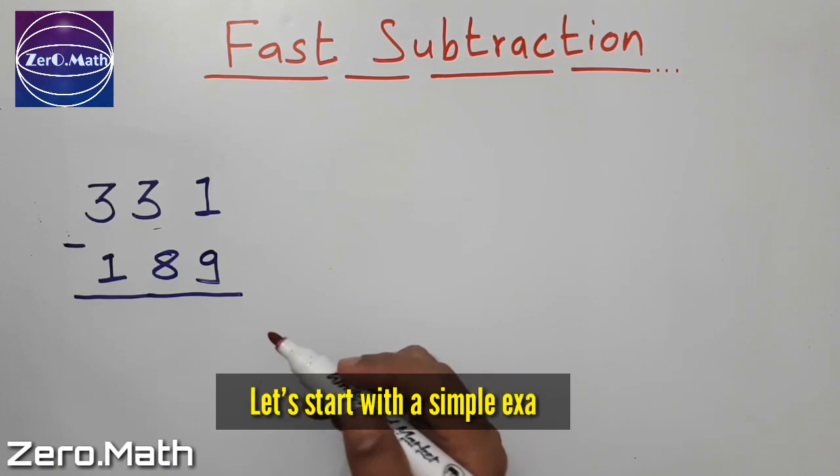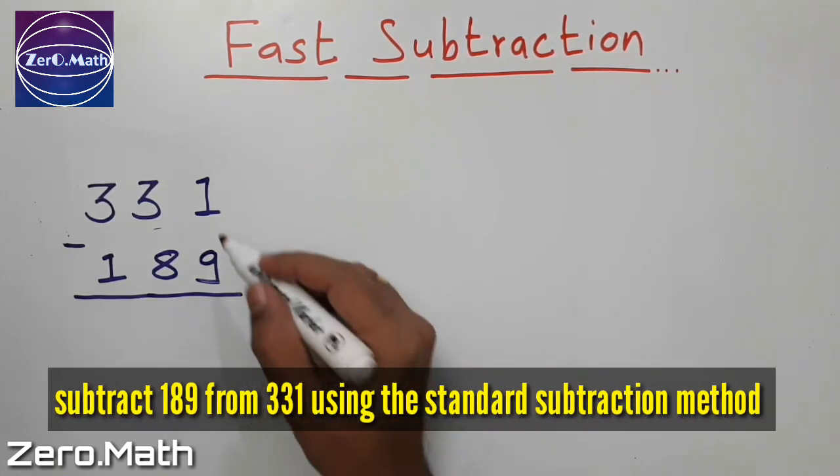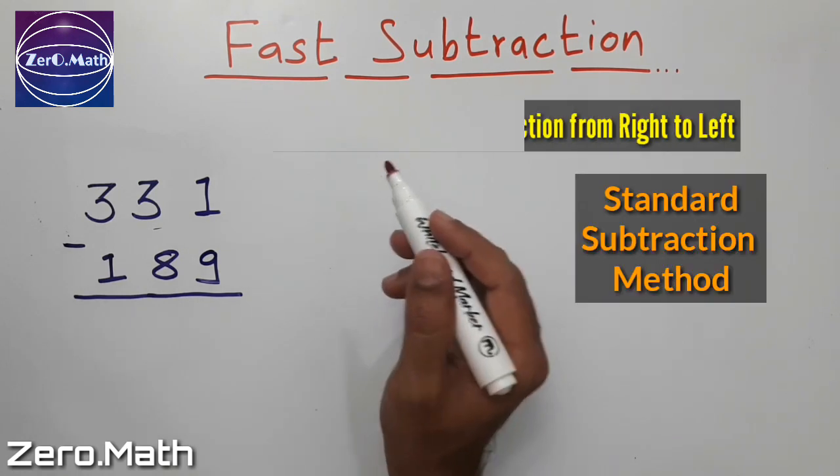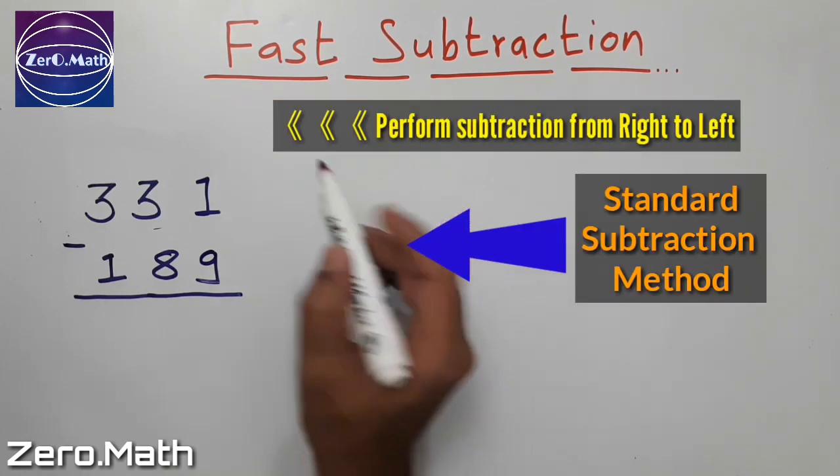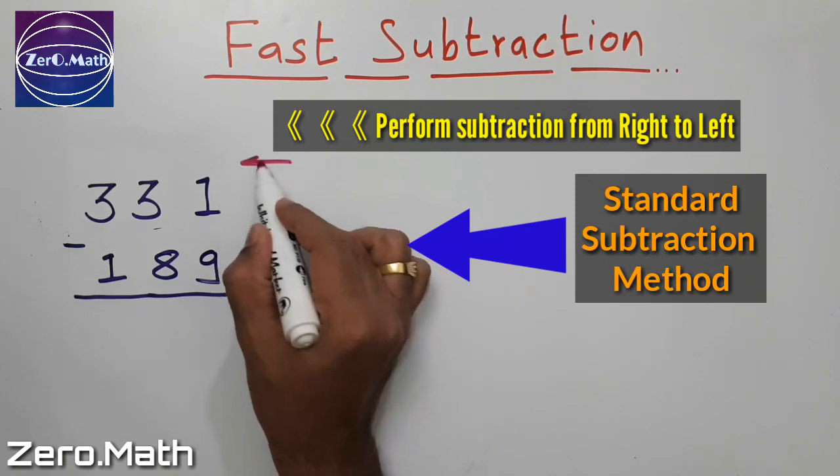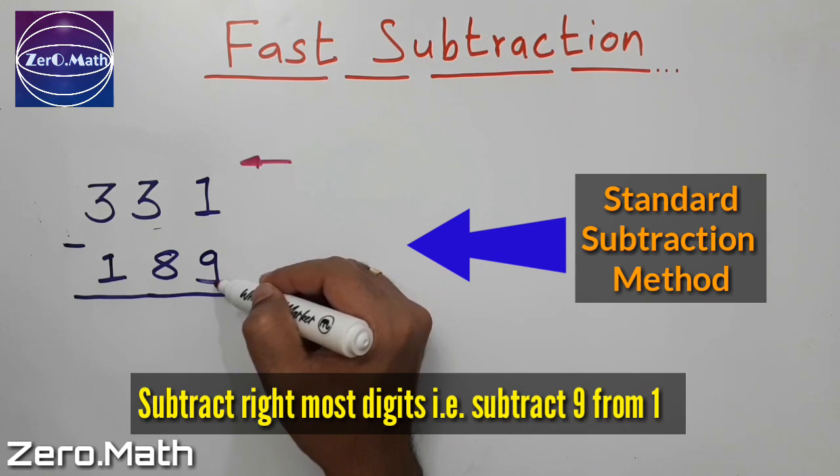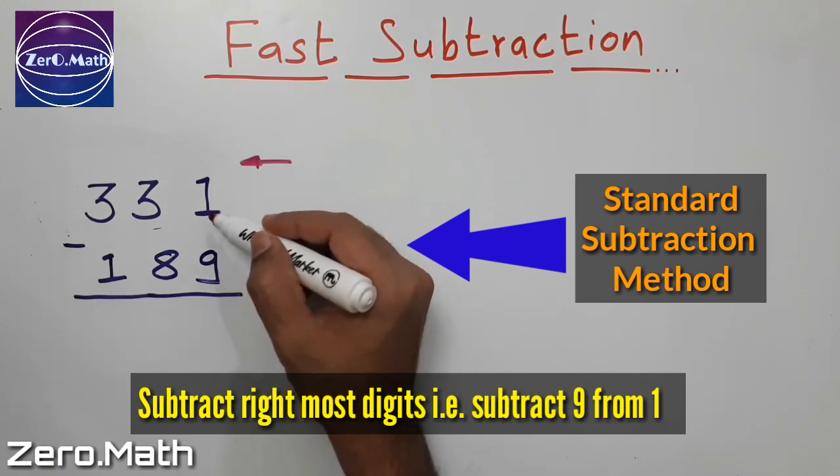Let's start with a simple example and subtract 189 from 331 using a standard subtraction method. In standard subtraction method we always perform subtraction from right to left. My rightmost digits are 1 and 9. Let's subtract 9 from 1.